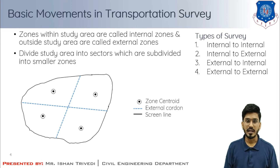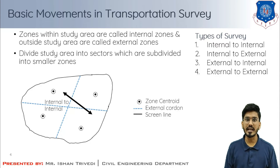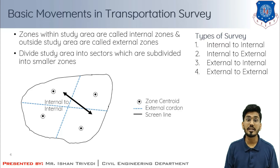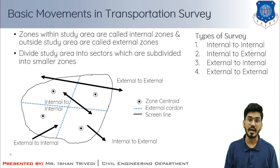A screen line forms the outer peripheral boundary of the study area, which is further divided by cordon lines — shown as blue highlighted lines — and each cordon line is further divided into zones with their centroids. Internal-to-internal movements are more numerous for larger areas and fewer for smaller areas. External-to-internal, internal-to-external, and external-to-external travel patterns are studied by the cordon line survey.